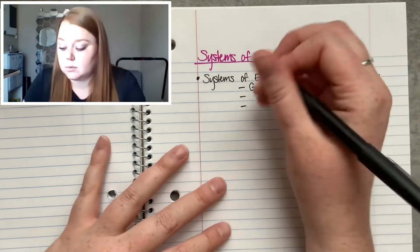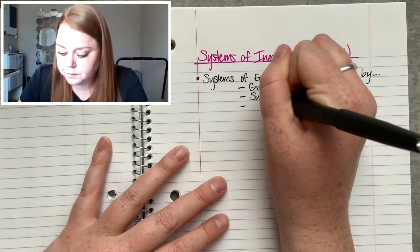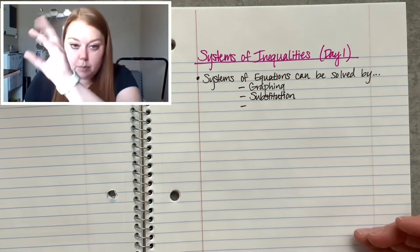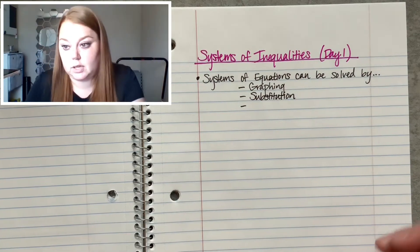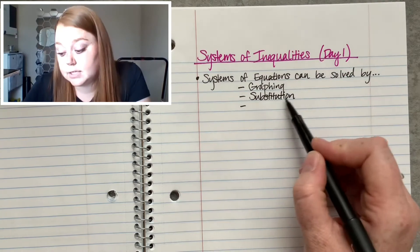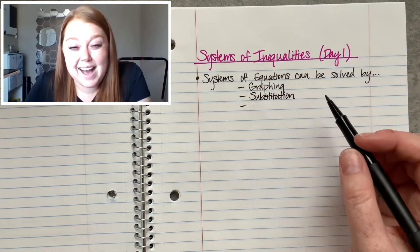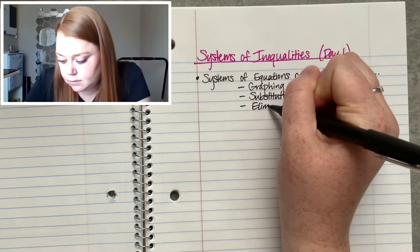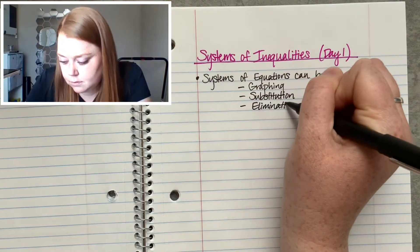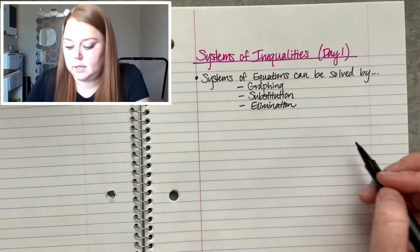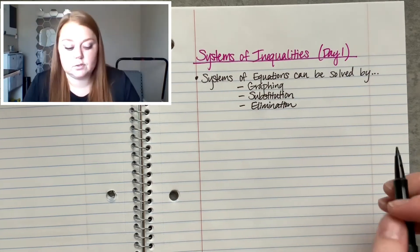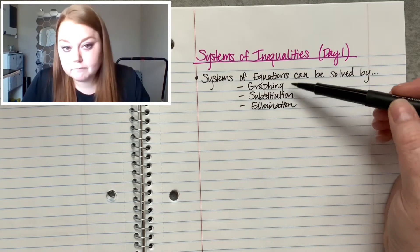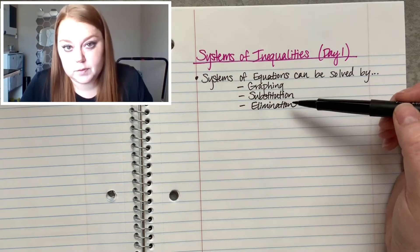So I taught you another way, which was substitution — that's where you do a lot of plugging in and replacing so that you can eventually solve for x and y, and that does give you the exact answer. I tend to like this third way a little bit better, which was elimination. Elimination is where you can solve for x and y one at a time. So these are all ways to solve systems of equations.